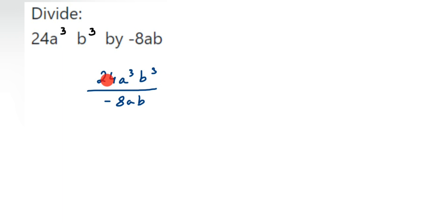Now here if you see, I can cancel -8 and 24. In 8's table, 8 ones are 8 and 8 threes are 24. Now what about this variable? This will become 3 upon -1, or -3 upon 1, you can write.